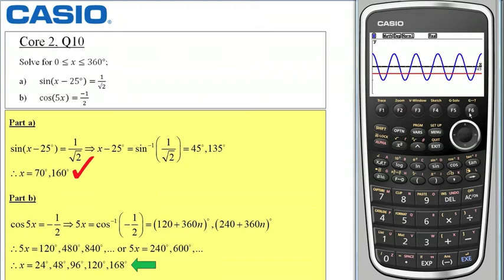Now you can see there are several solutions this time. I am interested in the points of intersection again so if I select f5 for g-solve and f5 again for intersect, the first one I obtain is 24 which corresponds to this value down here.